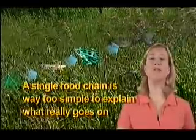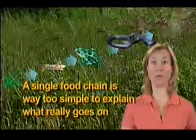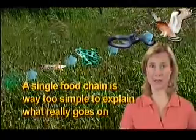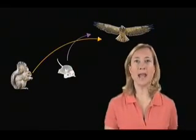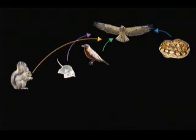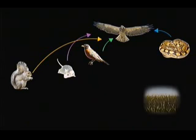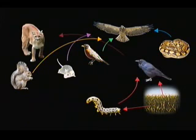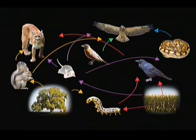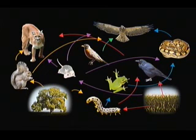Food chains give the right idea, but a single food chain is way too simple to explain what really goes on in an ecosystem. A more accurate picture of the meadow ecosystem shows that hawks eat squirrels, mice, and small birds as well as snakes. A more complete picture includes multiple and overlapping food chains.